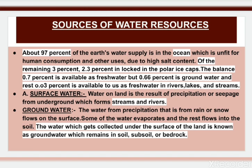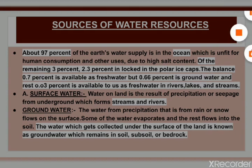Ground water is the water from precipitation — that is from rain or snow — that flows on the surface. Some of the water evaporates and the rest flows into the soil. The water which gets collected under the surface of the land is known as ground water, which remains in soil, subsoil or bedrock.